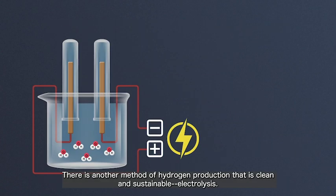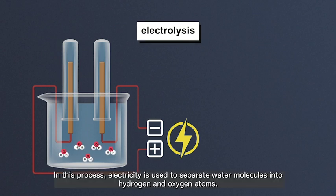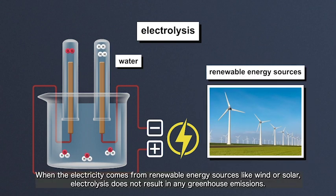There is another method of hydrogen production that is clean and sustainable – electrolysis. In this process, electricity is used to separate water molecules into hydrogen and oxygen atoms. When the electricity comes from renewable energy sources like wind or solar, electrolysis does not result in any greenhouse emissions.